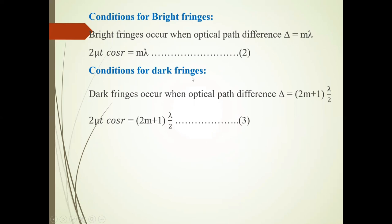Condition for dark fringes: Dark fringes occur when the optical path difference equals (2m+1)λ/2. So 2μT cos R equals (2m+1)λ/2. This is the condition for darkness.